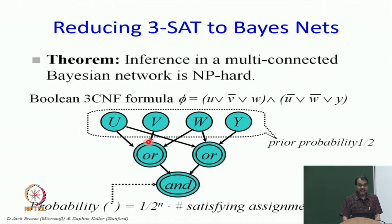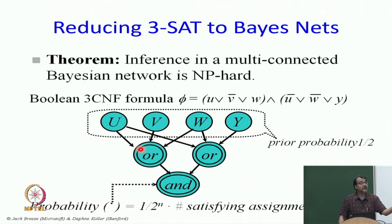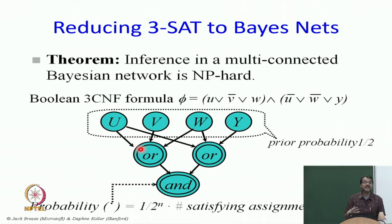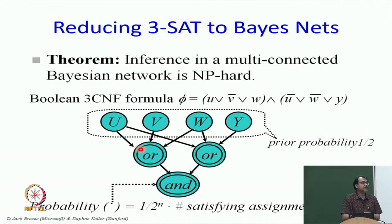Each OR node also needs a conditional probability table. The conditional probability table will be 0 if u is false, v is true and w is false, and 1 otherwise. So it is basically representing the OR function in the conditional probability table.